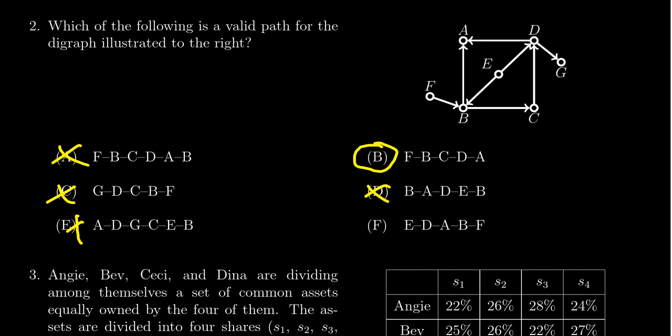So yep, sure enough, if you go through all of the possibilities, they all fail except for choice B. That is the only valid path on this diagraph.